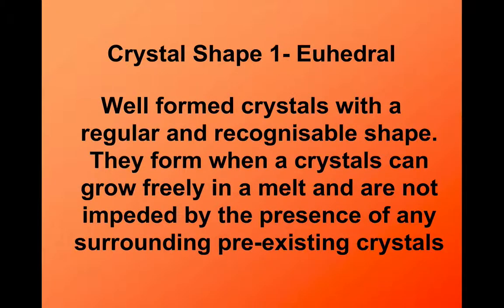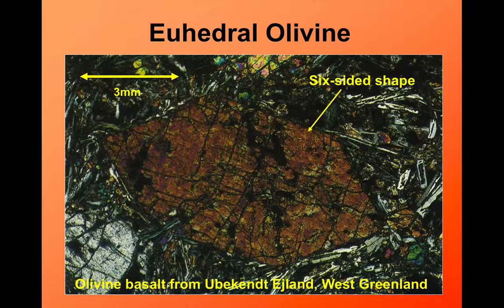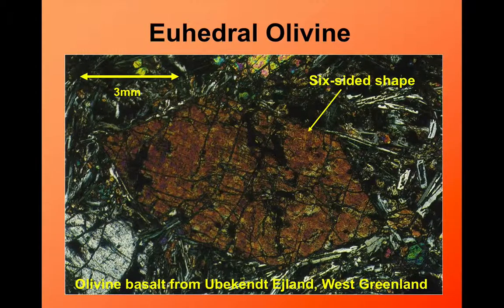The first of these is the word euhedral. It comes from a Greek word and literally means well-sided. These are crystals that have a regular form — a distinctive shape. It's recognisable because we see flat, straight-edged crystals within a rock, particularly in a thin section. Looking at this olivine crystal here, the dark crystal in the middle, you can see it has quite a regular, flat-sided hexagonal shape. This would be described as being euhedral.